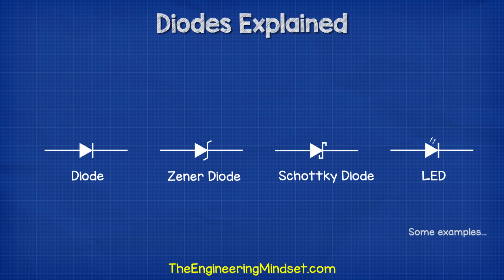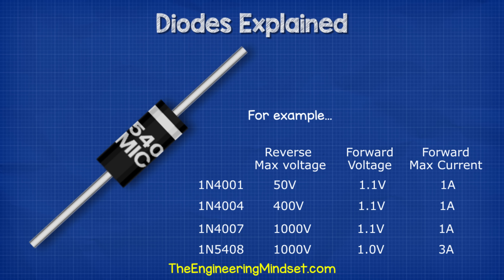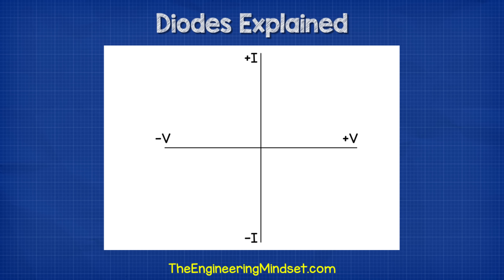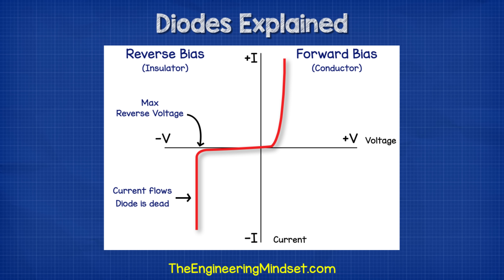Diodes are represented in engineering drawings with symbols like these. The stripe on the body is indicated with a vertical line on the symbol and the arrow points in the direction of conventional current. The numbers and letters on the diode body identify it so you can find the technical details online. The diode will have an IV diagram that plots its current and voltage characteristics, forming a curved line. One side shows how it performs when acting as a conductor and the other when acting as an insulator. The diode can only act as an insulator up to a certain voltage — if you exceed this it becomes a conductor and allows current to flow. This will destroy the diode and probably your circuit, so you need to make sure the diode is sized correctly for the application.